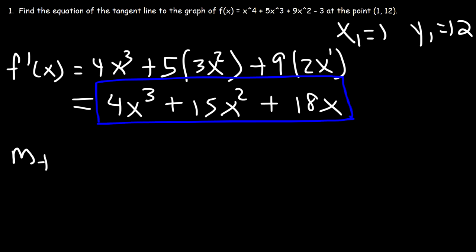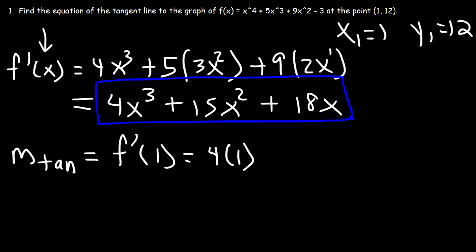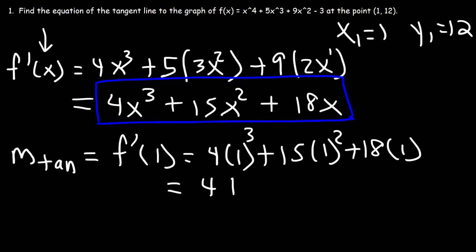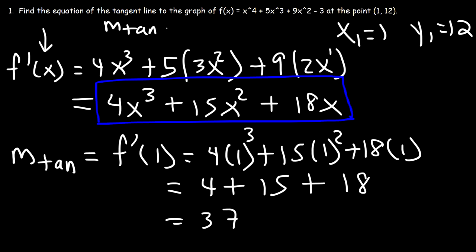Now we can calculate the slope of the tangent line by plugging x equals 1 into the derivative. f prime of 1 equals 4 times 1 cubed plus 15 times 1 squared plus 18 times 1, which is 4 plus 15 plus 18. That equals 37, so the slope of the tangent line is 37.